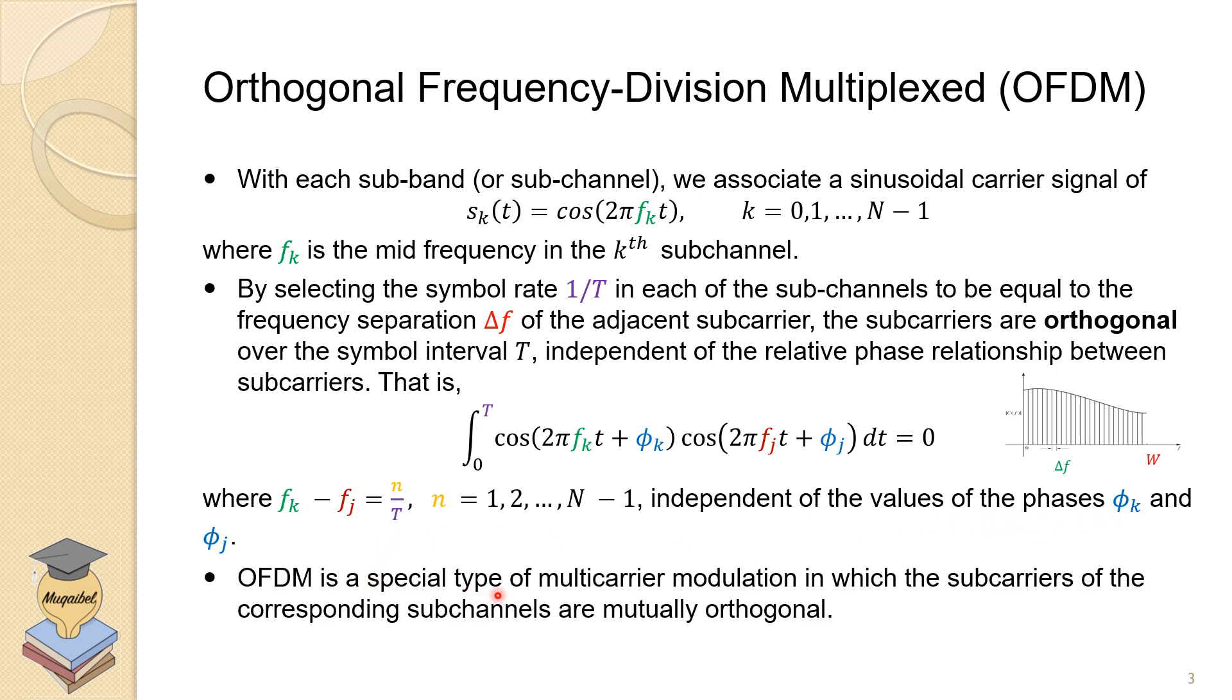OFDM is a special type or example of multi-carrier modulation, in which the sub-carriers of the corresponding sub-channels are mutually orthogonal. So we can have multi-carriers, and we can have a special case which is orthogonal multi-carrier.